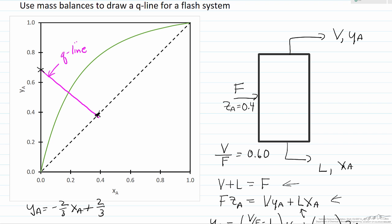This is the Q-line, corresponds to the mass balance. This point then, since this is where a vapor and liquid are in equilibrium, corresponds to the values for YA and XA leaving this flash unit.